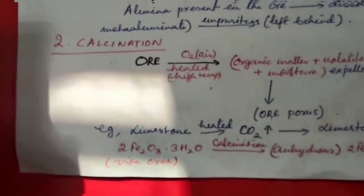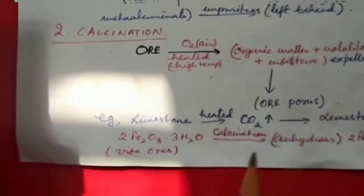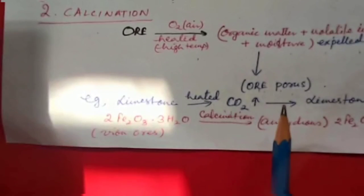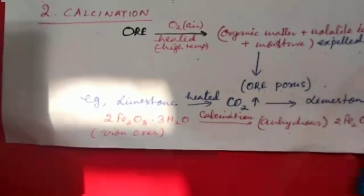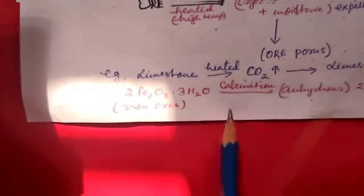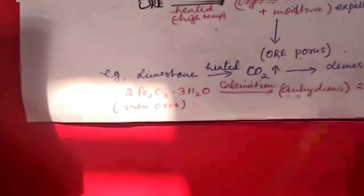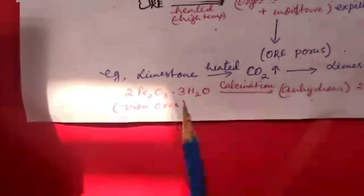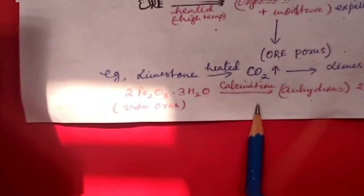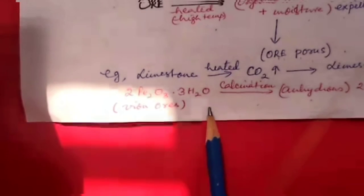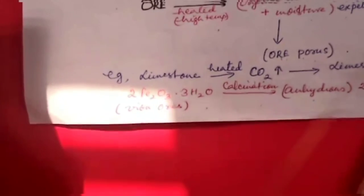Calcination is also done to remove water from hydrated oxide ores and carbon dioxide from carbonate ores. For example, when limestone is heated, carbon dioxide is given off and limestone is said to be calcined. When bauxite is calcined, water is removed and anhydrous alumina is left behind. Similarly, iron ores on calcination give anhydrous iron oxide. Calcination is generally done in a reverberatory furnace.